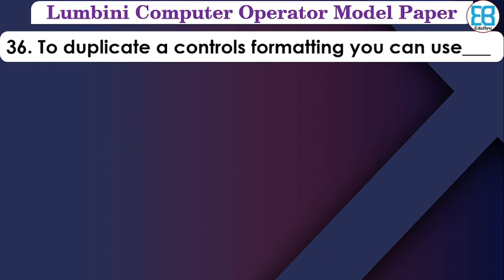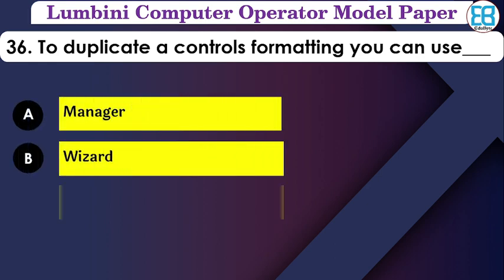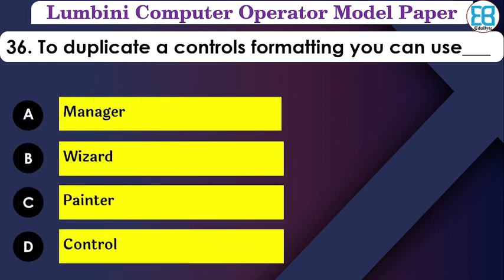To duplicate control formatting, which tool do we use? The options are: manager, wizard, format painter, control. The correct option is format painter — it is used to duplicate formatting.